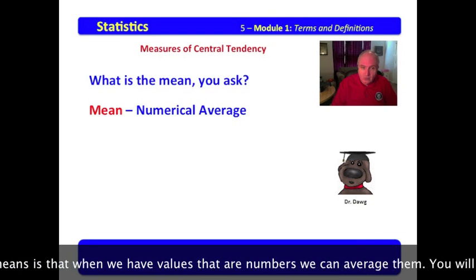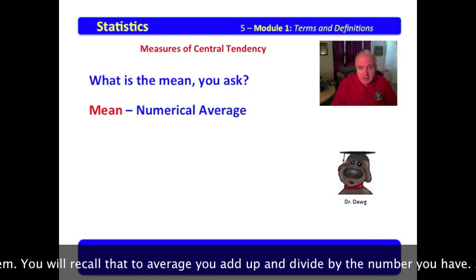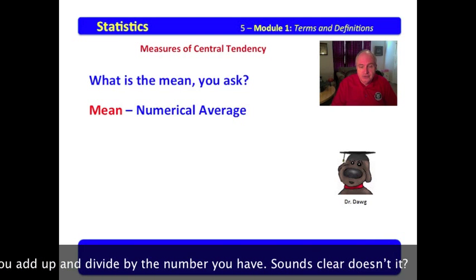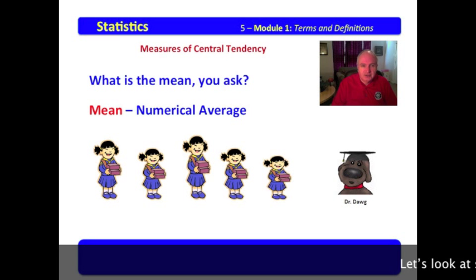What that means is that we have values that are numbers. We can average them. You will recall that to average you add up and divide by the number you have. Sounds clear, doesn't it? Well, let's look at some pictures.